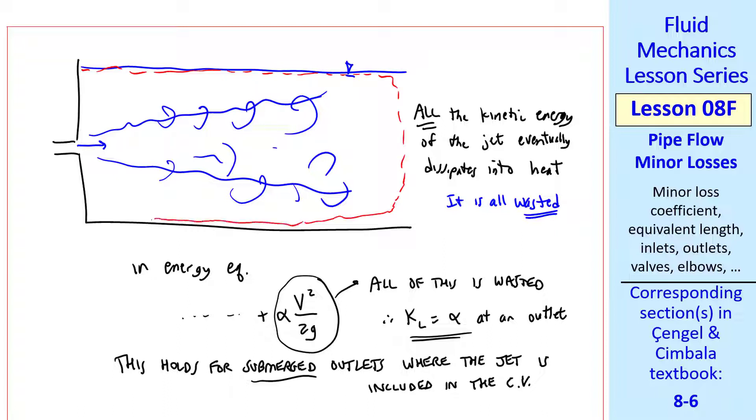For example, if we have our control volume that goes just below the surface like we like to do, and this is our outlet, this entire jet is included in the control volume. So we include this KL equal alpha as one of our minor losses.